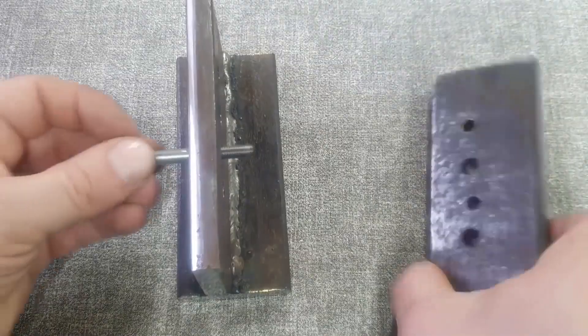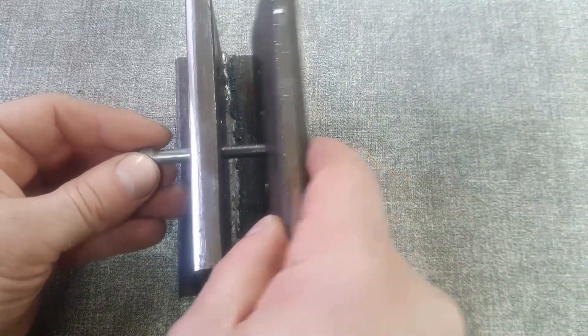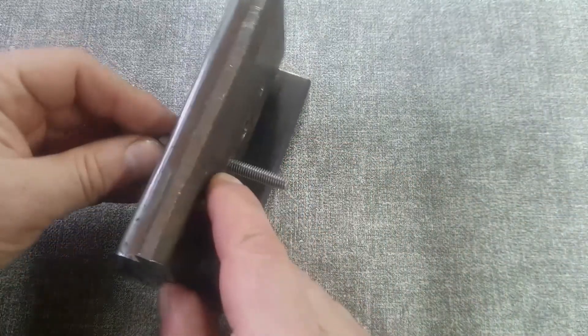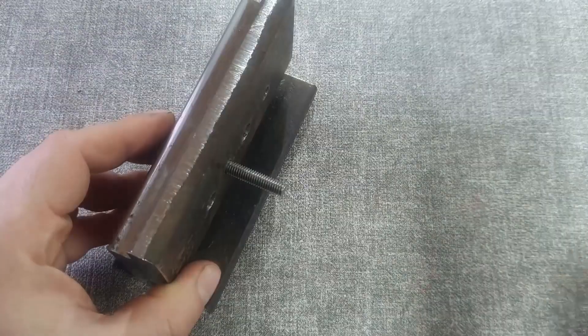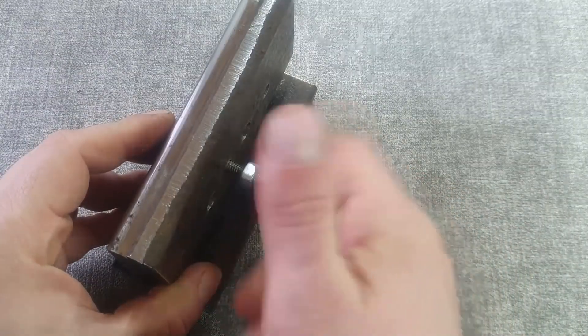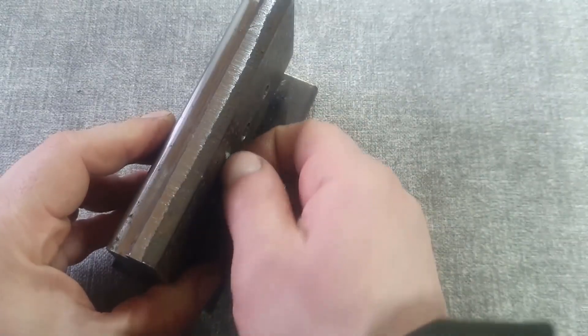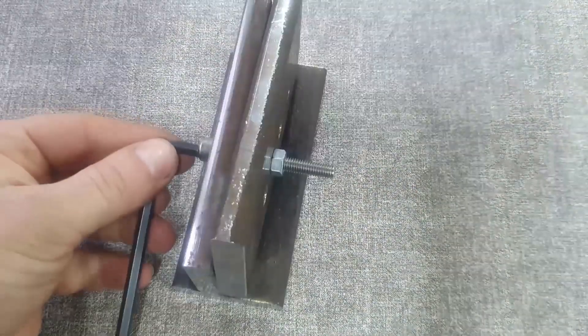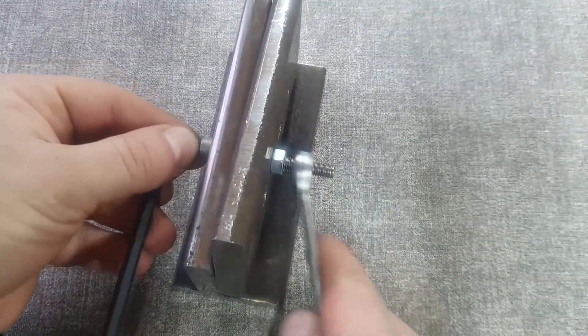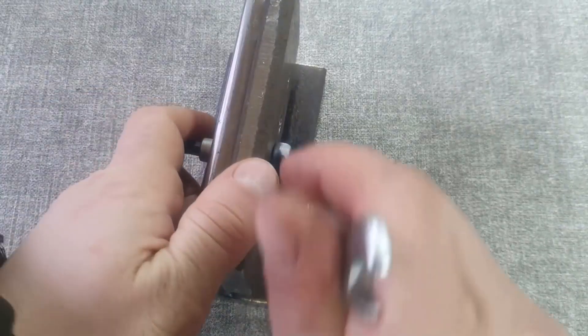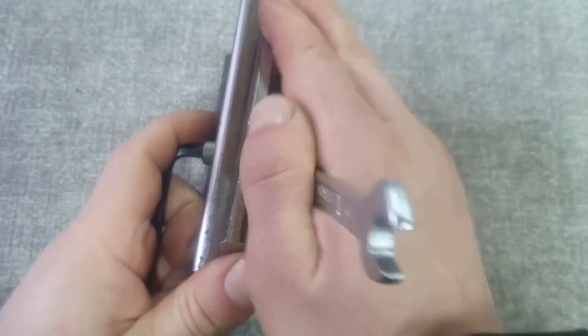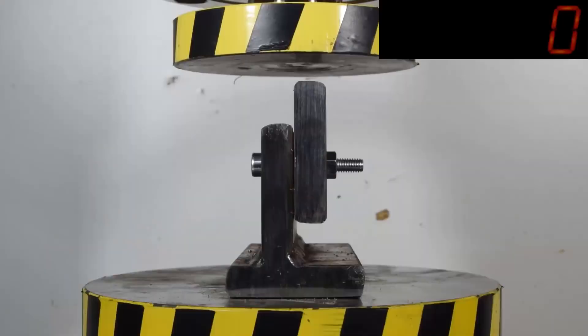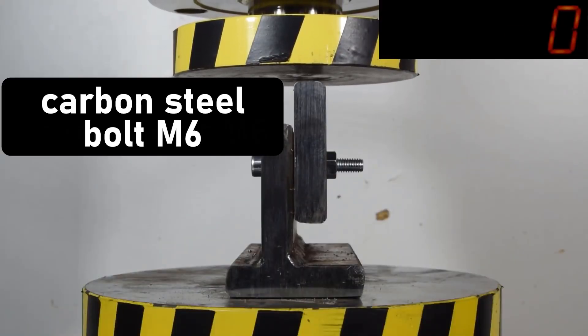For shear test, I made this gadget. Here's a hole with a diameter of 6 mm and one with a diameter of 8 mm, for testing M6 and M8 bolts, respectively. Here's how it works. The bolt is inserted into the fixture, secured with the nut, and all of this is placed under the hydraulic press. We'll press it using a precise load cell to determine the load at which the bolt will fail. So, let's start the shear test.